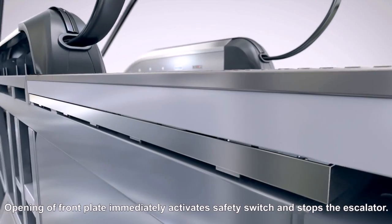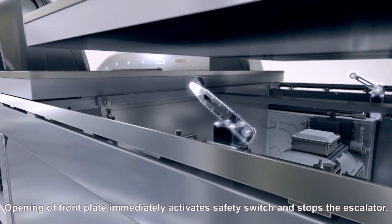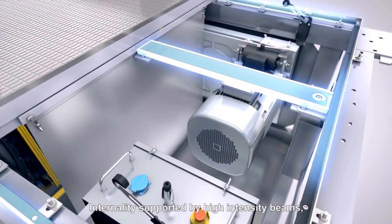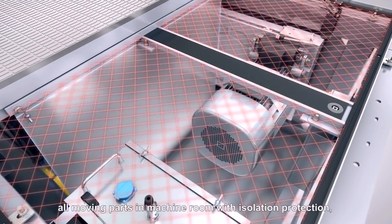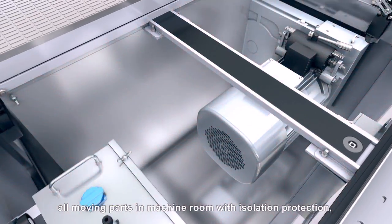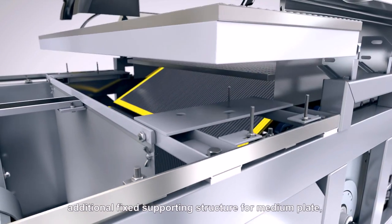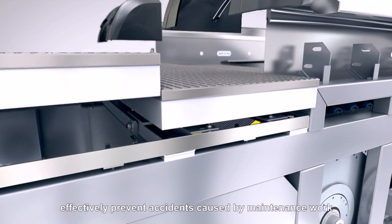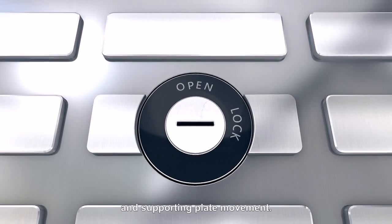Opening a front plate immediately activates safety switch and stops the escalator. Internally supported by high intensity beams. All moving parts in machine room with isolation protection. Additional fixed supporting structure for medium plate. Effectively prevent accidents caused by maintenance work and supporting plate movement.